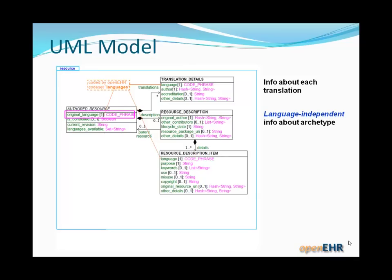We have language-independent information about the archetype — this is about the original author, contributors to the archetype during its design phase, the current lifecycle state, and resource package reference. The next class, resource description item, contains language-dependent information. The previous class is language independent because the items there — author, contributors, lifecycle state — are names of people and things that don't change and are independent of language.